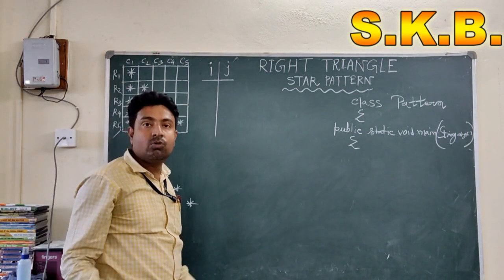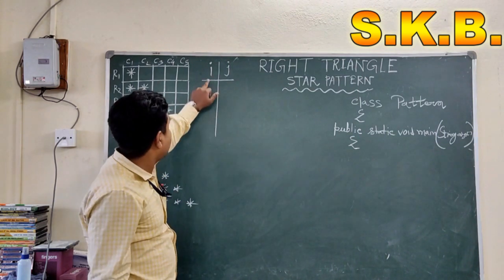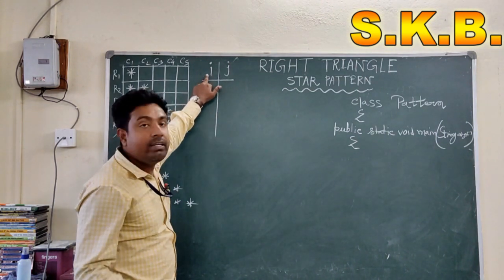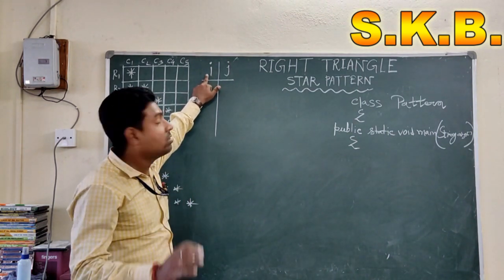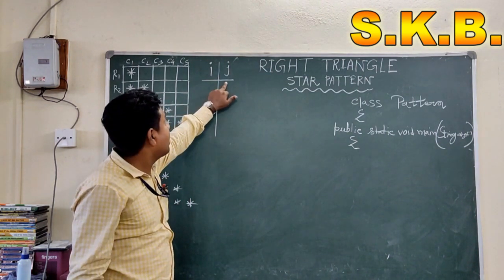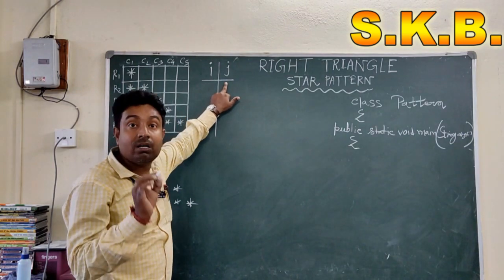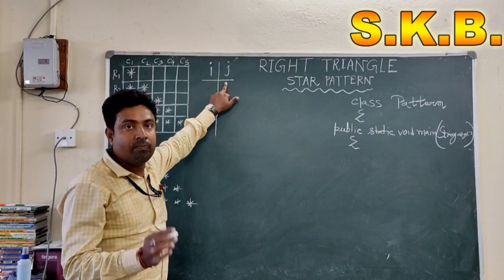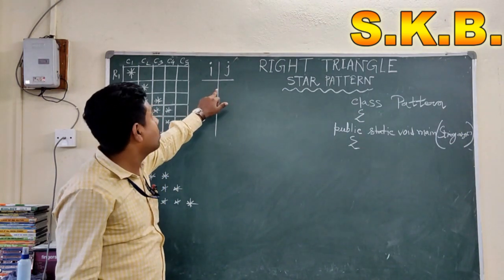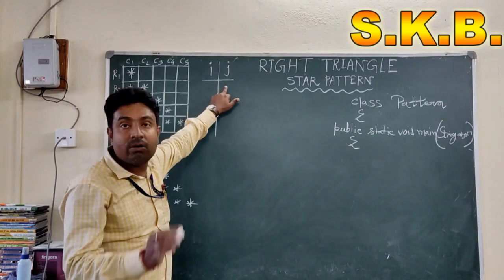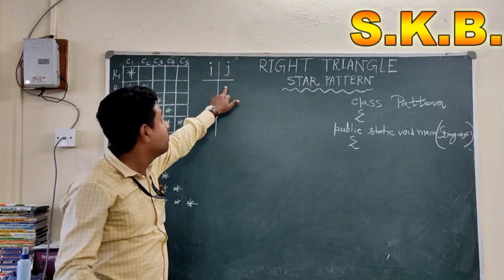This is our left triangle star pattern program, represented through a table. A table is a combination of multiple rows and columns — all vertical lines indicate columns and all horizontal lines indicate rows. To print this pattern, to print the column and row values, we should use two nested for loops, using variables I and J.